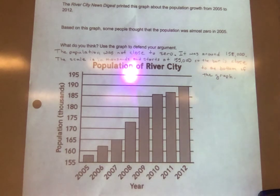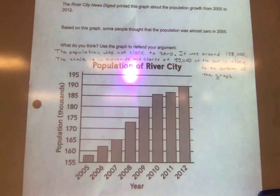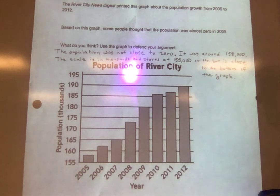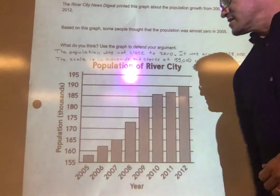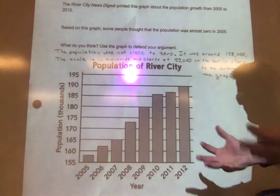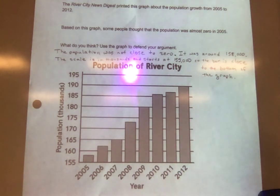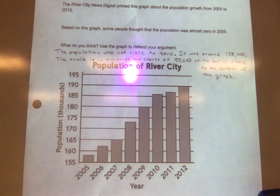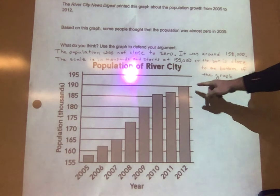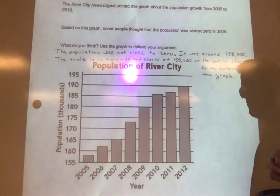A lot of people think the bottom of a graph is going to be almost zero, but you can label these scales however you would like. In this case, this city had around 158,000 people. The bar just looks like it's close to zero, but if you study the graph, you'll see that it's not. In 2005, it's actually a rather large city, and it's grown quite a bit, all the way up to 190,000.